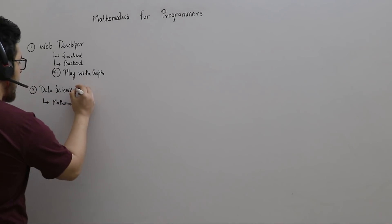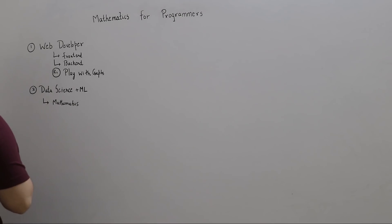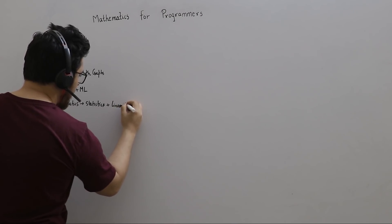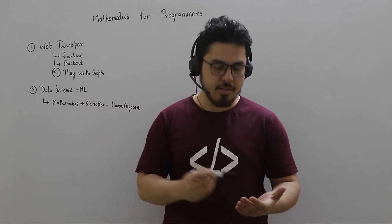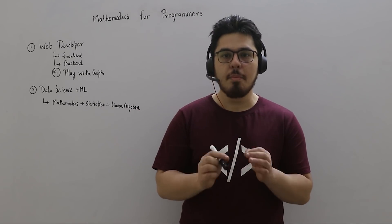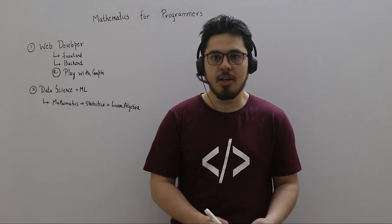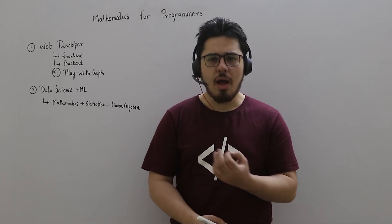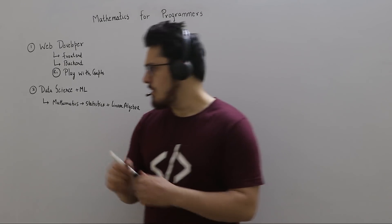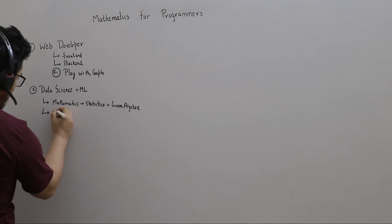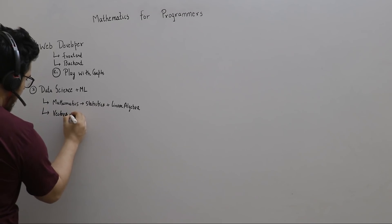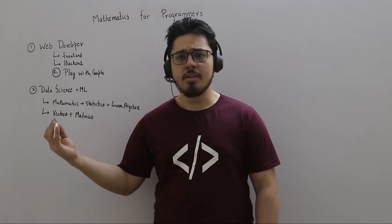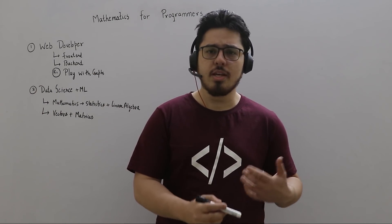For data science plus machine learning, you should have statistics and linear algebra. This is very important because data science is all about mathematics and linear algebra — it is all about working on data. If you want to work with data you will need statistics, and if you use ML models you will need linear algebra. Vectors and matrices play a very important role.